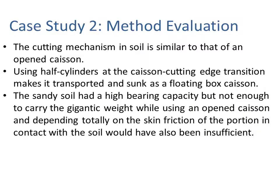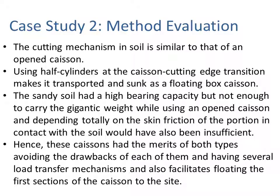This was a special case where the cutting mechanism in soil was similar to that of an open caisson, but they used a half-cylinder at the caisson cutting edge transition that allowed it to be transported and sunk as a floating box caisson. This approach combined the merits of both methods: the sandy soil had high bearing capacity but not sufficient for the gigantic weight, and depending solely on skin friction using an open caisson would have also been insufficient. These caissons thus utilized multiple load transfer mechanisms while facilitating floating the first sections to the site.